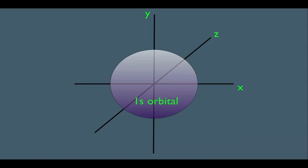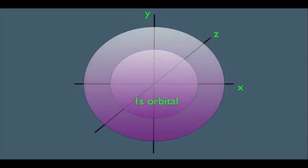Therefore, using this logic, there's also something called a 2s orbital. Remember, the s tells us the shape of the orbital. And 2 tells us how far from the nucleus the orbital can extend.